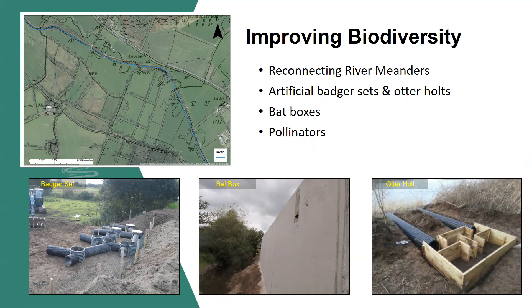In our flood relief schemes, we are looking to introduce enhancements. Here are just a few examples that we are using: on the left, an artificial badger set; in the middle, a bat box incorporated into a flood wall; and on the right, an artificial otter holt. Again, the aim is to increase biodiversity, create habitats and generally improve the ecological status of the channel.